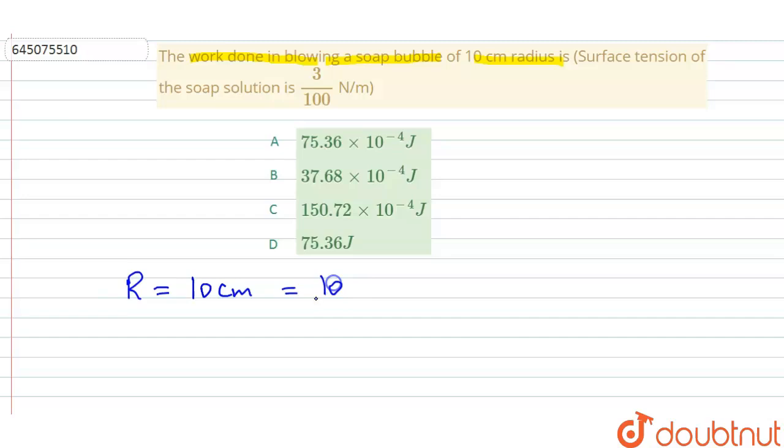In meters, I can write 10 by 100, that is 10 to the power minus 1 meter. So the soap bubble having very low surface area then...